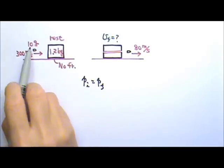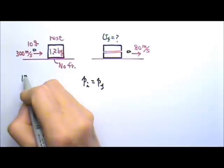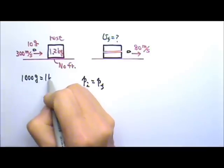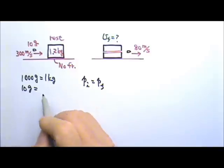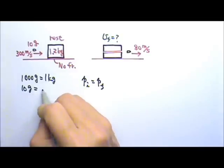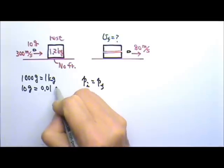So we need to convert the 10 g to kg. Now 1,000 g is 1 kg. So to change 10 g to kg, we just have to divide it by 1,000. Divide it by 1,000, we get 0.01 kg.